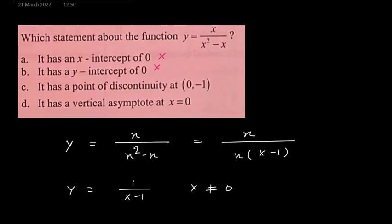Option c, it is a point of discontinuity. We know that x cannot take value 0. So here x equal to 0 is a point of discontinuity. When x equals 0, I have y equals 1 upon 0 minus 1 which is minus 1. So 0 comma minus 1 is the point of discontinuity.